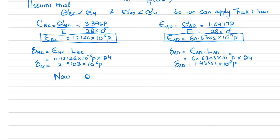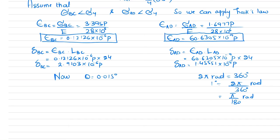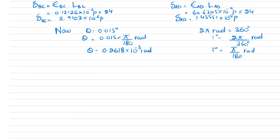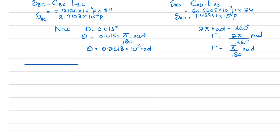The angle of tilt theta is given as 0.015 degrees. Converting to radians: 1 degree = π/180 radians, so theta = 0.015 × π/180 = 0.2618 × 10⁻³ radians. This theta is very small. Drawing the figure, this is beam AB, and due to load P it will tilt.